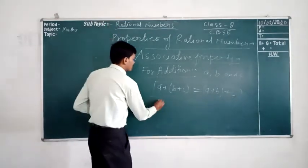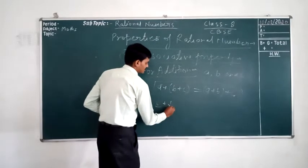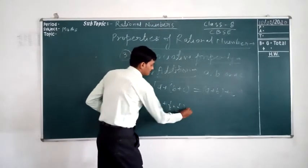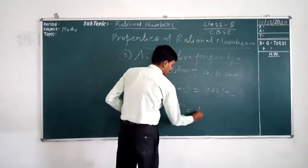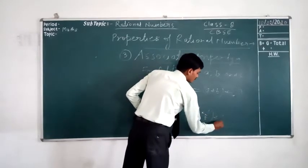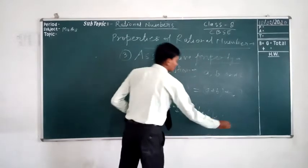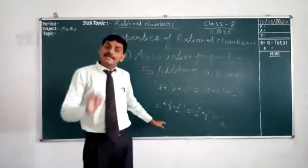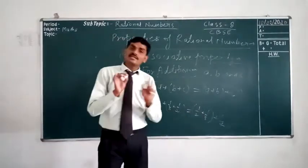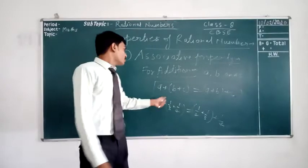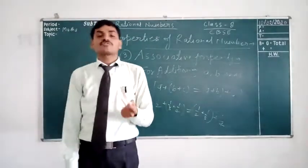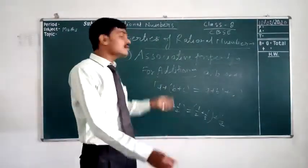Let's take an example: (1/2 + 1/3) + 1/4 and 1/2 + (1/3 + 1/4). After adding, we will get the same answer. So we can say rational numbers are associative for addition.